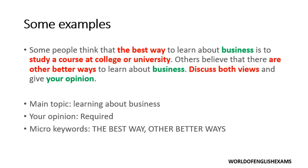I have used two different colors here so that you can understand the concept better. Let's read the question: 'Some people think that the best way to learn about business is to study a course at a college or university.' Now here, the topic is not just business — it is learning about business. The main topic is the method to learn about business. If you just write about business in general, you're not going to cover the major part.